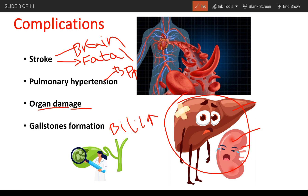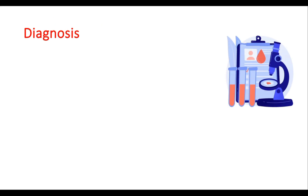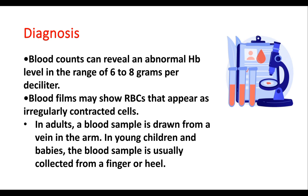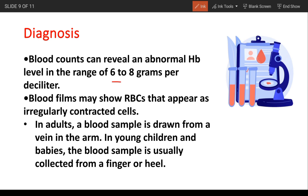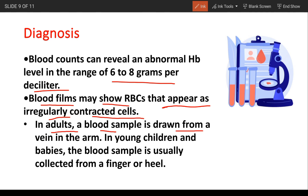Diagnosis. Blood counts can reveal hemoglobin levels in the range of 6 to 8 grams per deciliter. Blood film shows cells that appear as irregularly contracted cells. In adults, a blood sample is drawn from a vein in the arm; in young children and babies it is more challenging, so it is collected from a finger or heel.